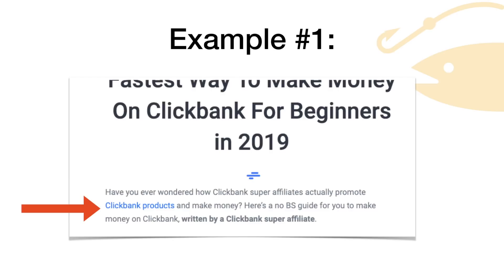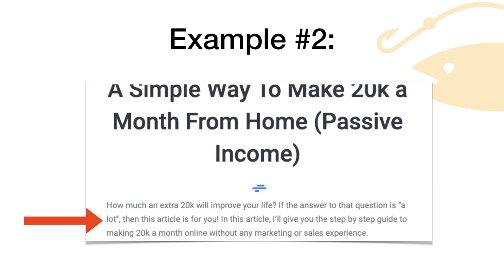Here's an example of an intro to an article. This one is all about establishing authority — it's saying that you're going to learn from a super affiliate. Here's another one that addresses fears: 'How much an extra 20k will improve your life.' So that's about fears. You can pause the video to take a look at these examples.